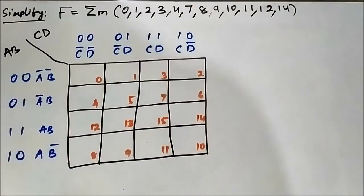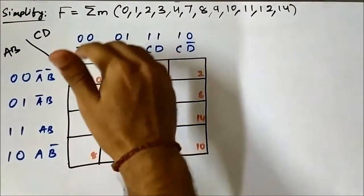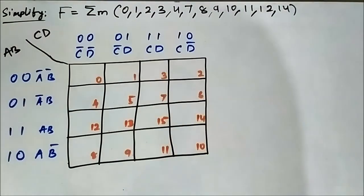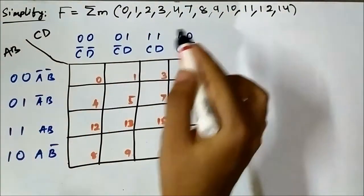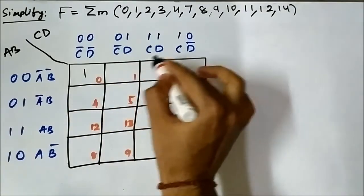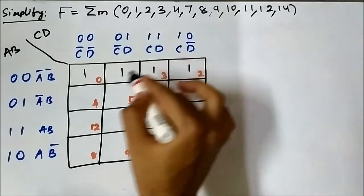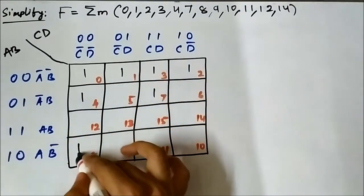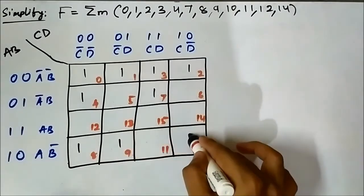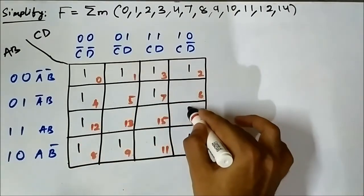We have the format of the 4-variable SOP K-map. Now we have to map this boolean function into the K-map. We have to mark the respective cells as per the minterm values given: 0, 1, 2, 3, 4, 7, 8, 9, 10, 11, 12, and 14.